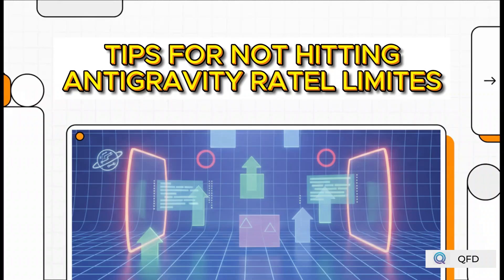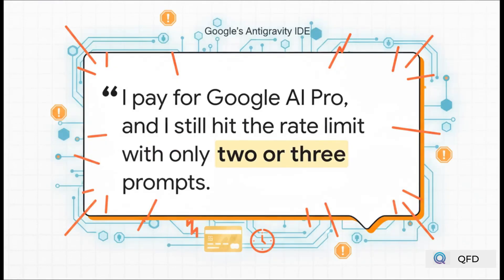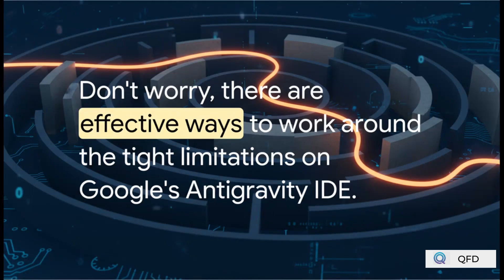Running into Google's Antigravity rate limits — let's talk about how to get around them. If you're a developer on Google's Antigravity, you've probably noticed the usage quotas are tight. Even folks paying for AI Pro are hitting that wall after just a few prompts. Super frustrating. But don't worry, there are a few smart ways to handle this.